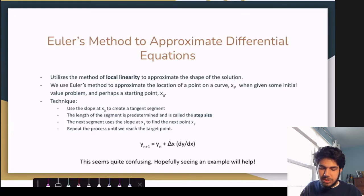So the technique is outlined as follows. We'll use the slope at x naught to create a tangent segment. And the length of the segment is predetermined, and it's called our step size. And then we'll use the next segment uses the slope at x1, which is at the end of the previous segment, to find the next point x2. And we repeat this process until we reach the target point.